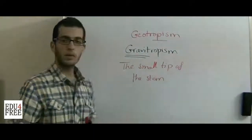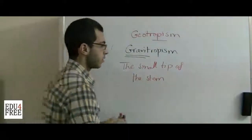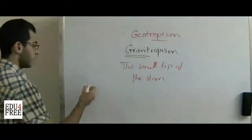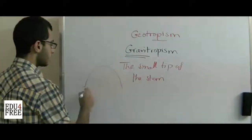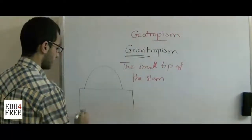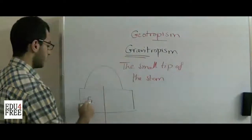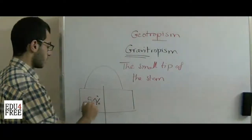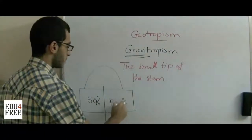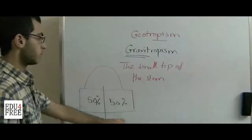When the plant is in its normal vertical position, the auxins are produced equally on both sides of the tip. If the tip is placed on an agar block so that the auxins diffuse into it to show their distribution, we find that 50% of the produced auxins are on the left and 50% on the right — they are equally distributed.